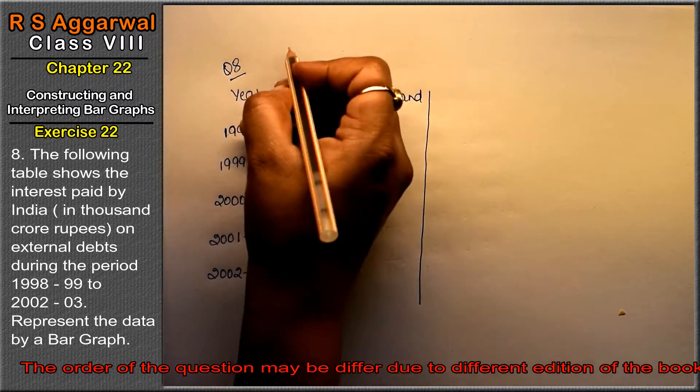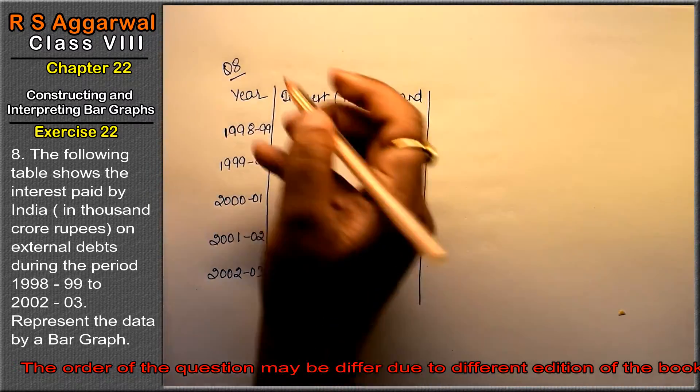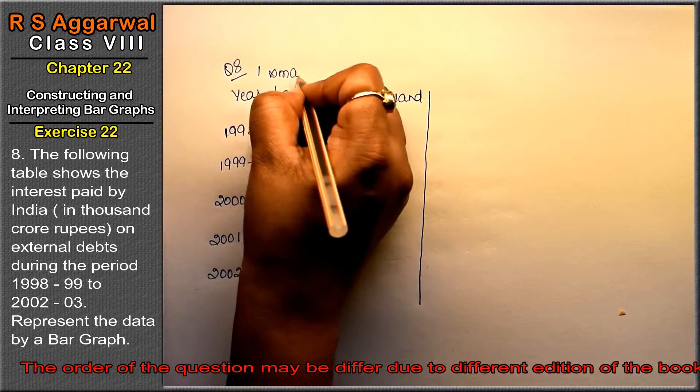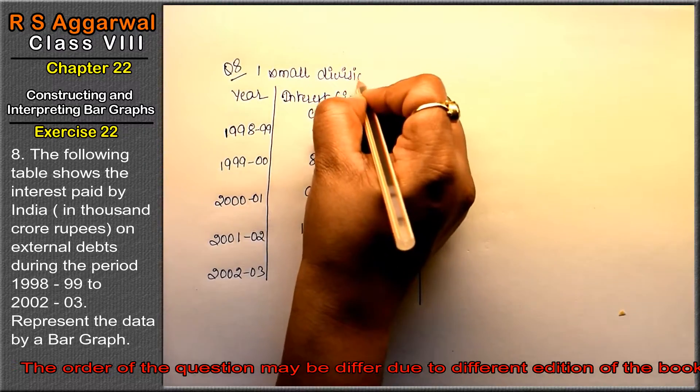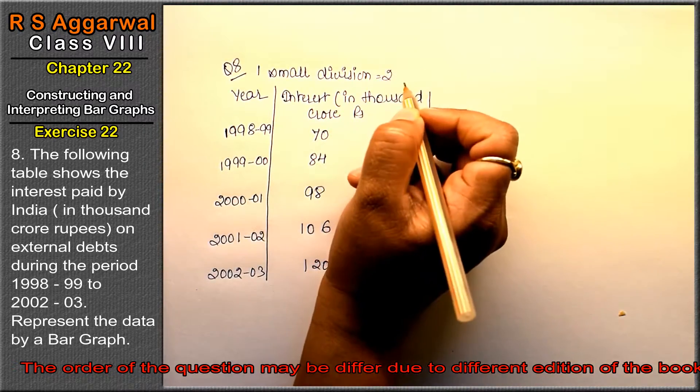Now let's look at the small divisions. 2 is common, so one small division equals 2.